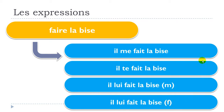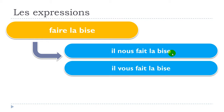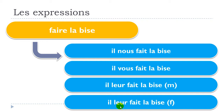So for the singular it's quite easy: il me fait la bise, il te fait la bise, il lui fait la bise. Now for the plural — first person: il nous fait la bise; second person: il vous fait la bise; third person plural masculine: il leur fait la bise; and just as with the singular, the feminine form uses the same pronoun: il leur fait la bise.